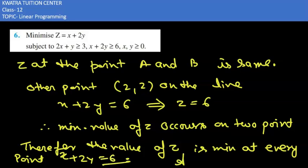So here is the required solution of this question that z is having all the values which are minimal on the given line.